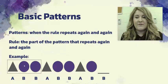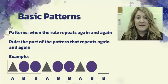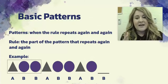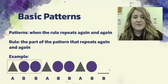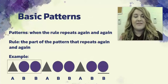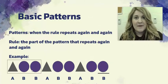The pattern repeats: ABB, ABB. So we know what comes next — B. We look and see what shape goes with B: it's a purple circle. So the next shape in this pattern is a purple circle. That is our basic ABB pattern.